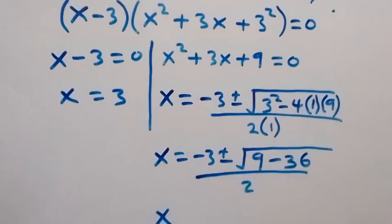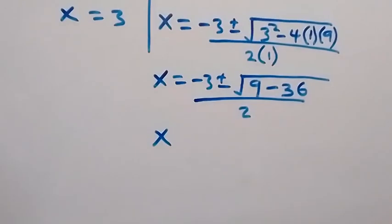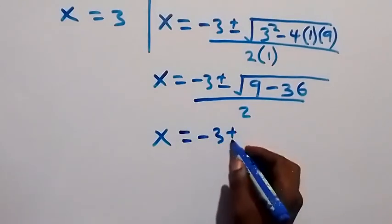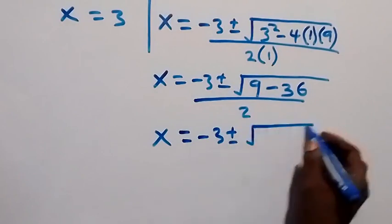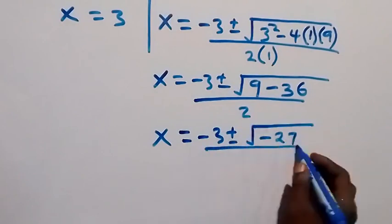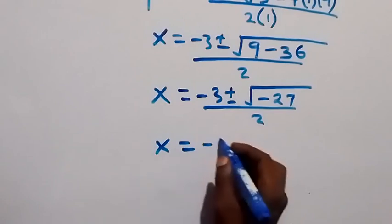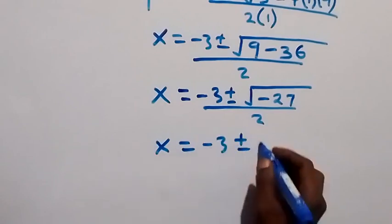So we have x will now be = (-3 ± √(-27))/2. And we can rewrite -27, and that will give us x = (-3 ± √(9 × 3 × -1))/2.